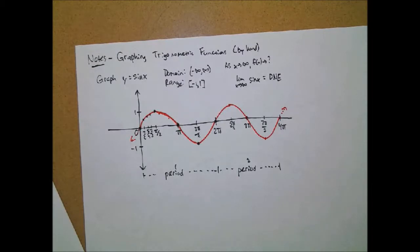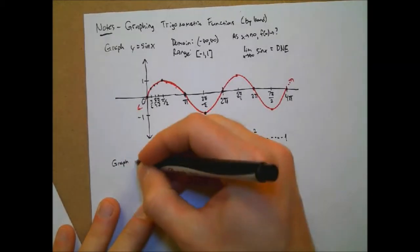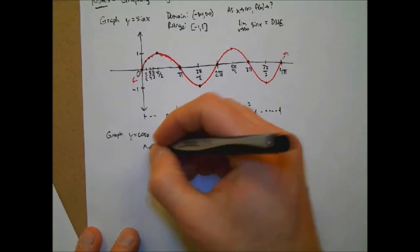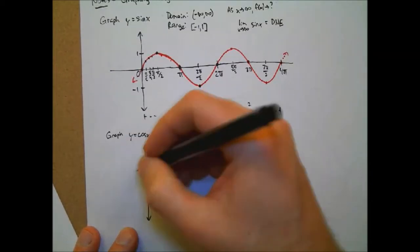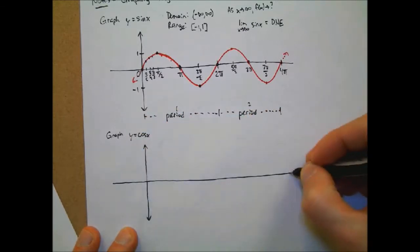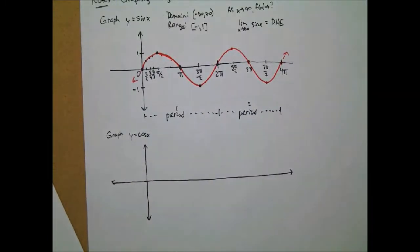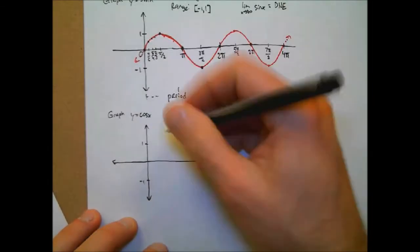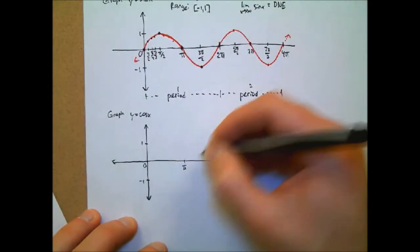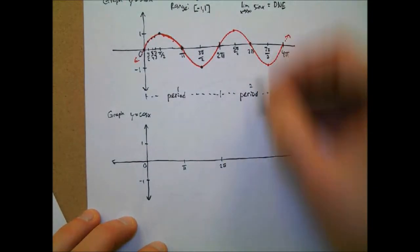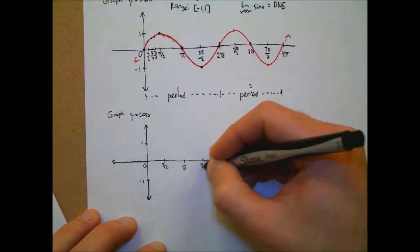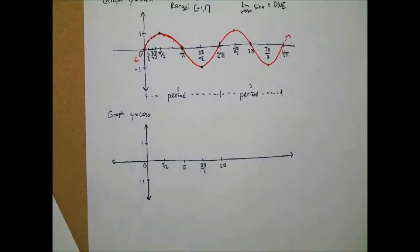Why don't you guys go ahead and try to graph y equals cosine of x — one full period. Use what you know about the unit circle. The highest value cosine will give us is 1, and the lowest is negative 1. I'll line up the y-axis and the key x-values like pi and two pi so you can compare them to sine.